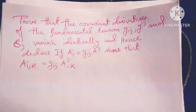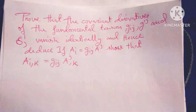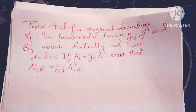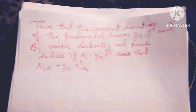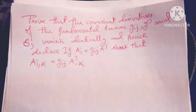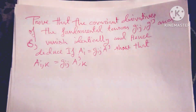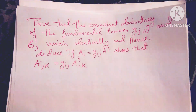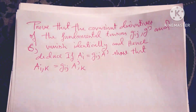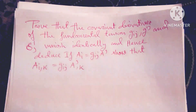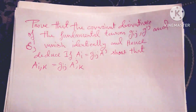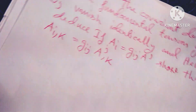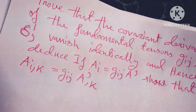Prove that the covariant derivative of the fundamental tensors g_ij, g^ij, and delta^i_j vanishes identically, and hence deduce that if a_i equals g_ij a^j, then a_{i,k} equals g_ij a^j_{,k}.